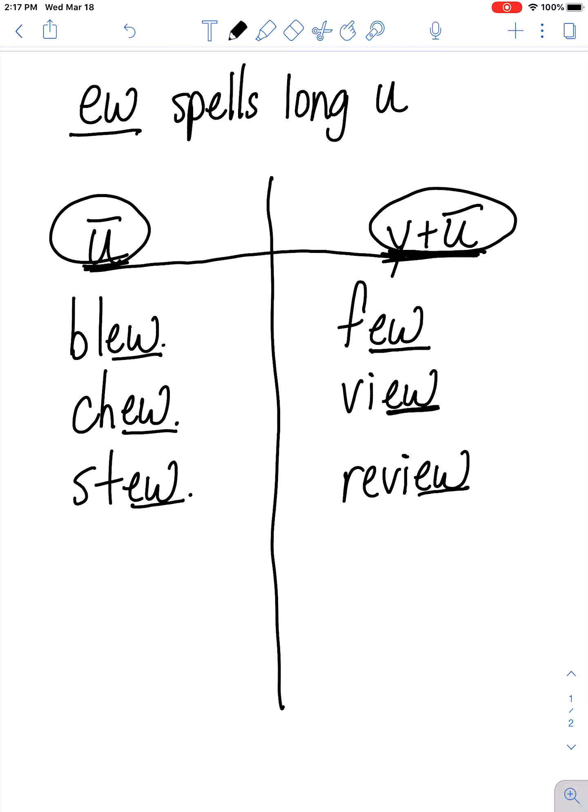All of our words this week, which you can find on page 134 in your book, use EW to either spell ooh or you.